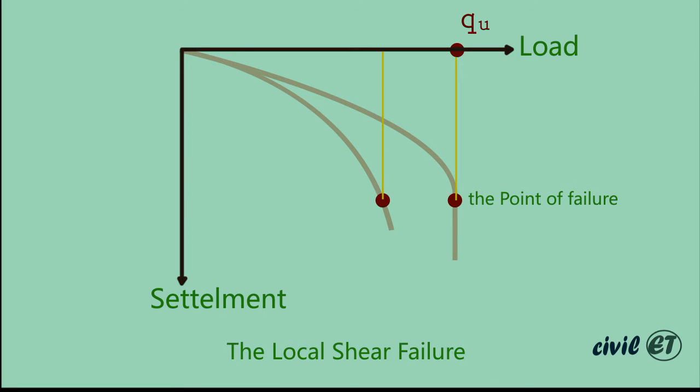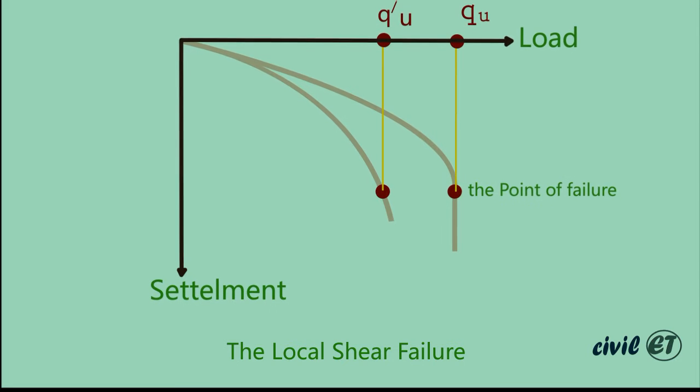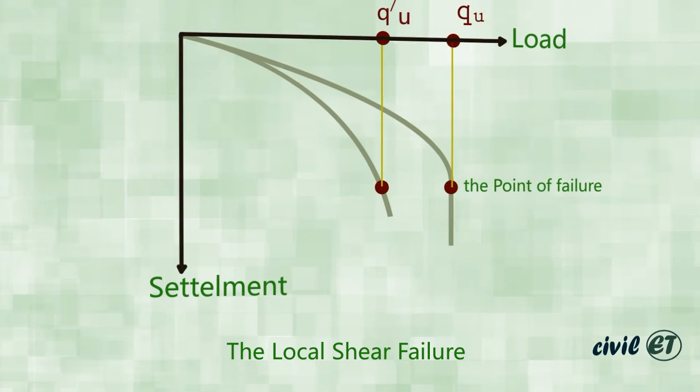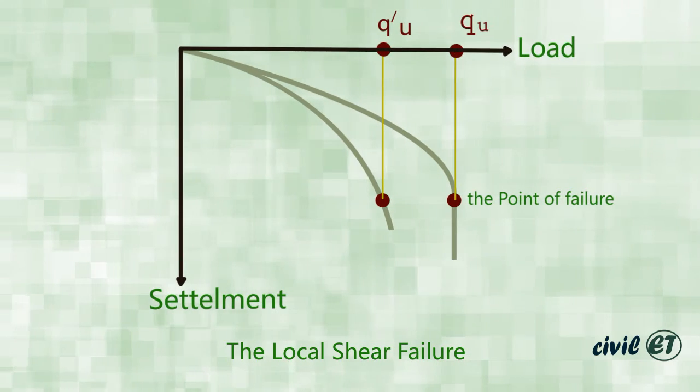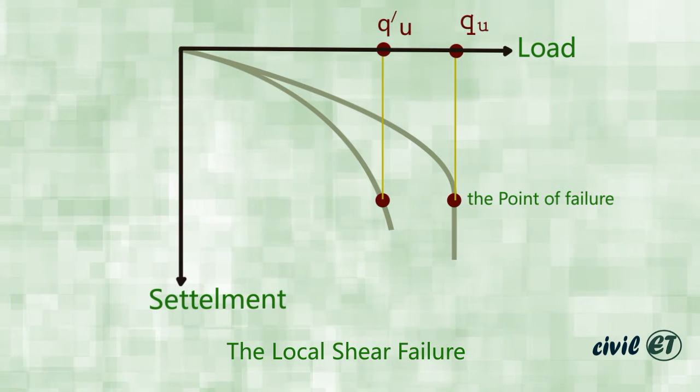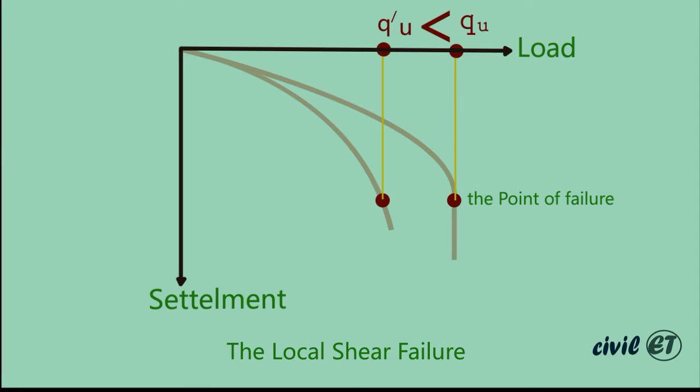time the failure happens faster with a steep incline curve. Let's call the point of failure q'u this time. You'll notice that q'u is less than qu. Remember, qu happens in dense sand and q'u in loose sand. This shows the importance of using compaction and increasing the strength of the soil.